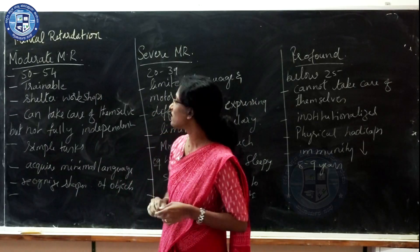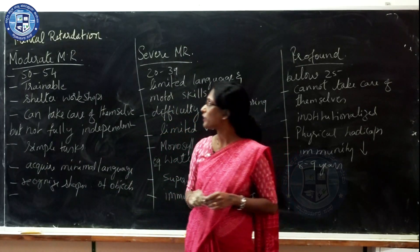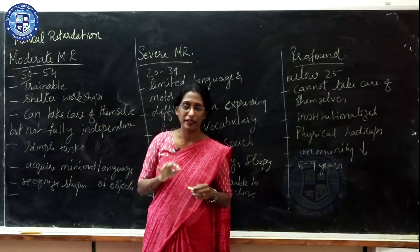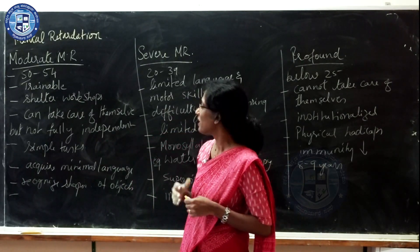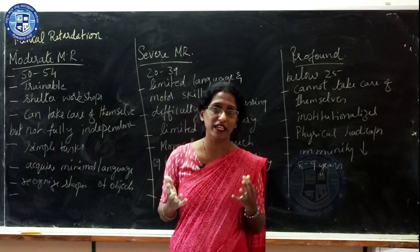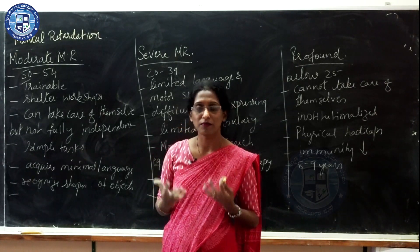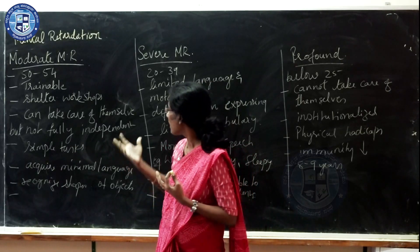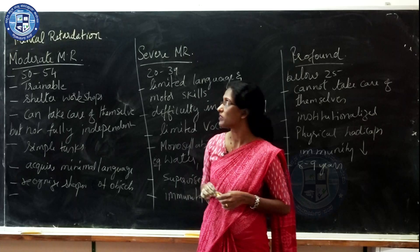Moderate mental retardation has an IQ of around 50 to 54. These individuals are called trainable and can be trained in sheltered workshops. They can do simple tasks and take care of themselves to some extent, but they are not fully independent and need supervision. They can recognize shapes and acquire minimal language.